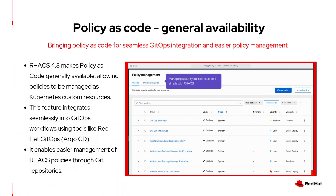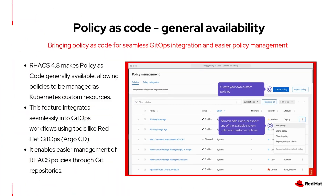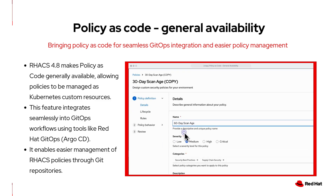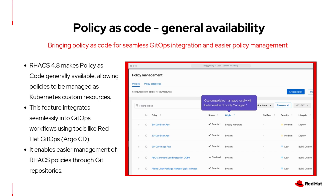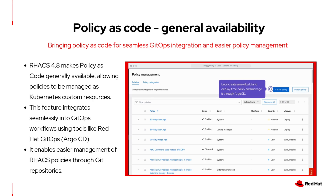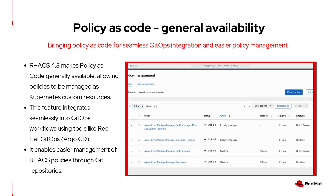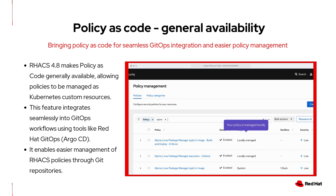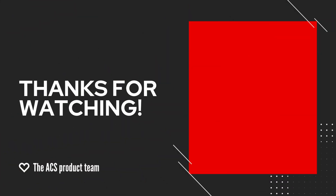And last but not least, policy as code is now generally available in ACS 4.8. This feature lets you manage ACS policies as Kubernetes custom resources and integrate them into your GitOps workflows. You can now use tools like Red Hat GitOps or Argo CD to manage policies, making it easier to maintain and update security policies directly from your Git repo.